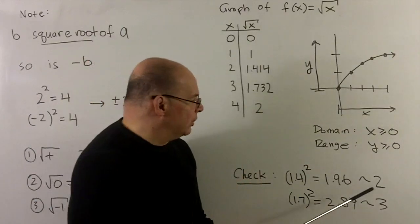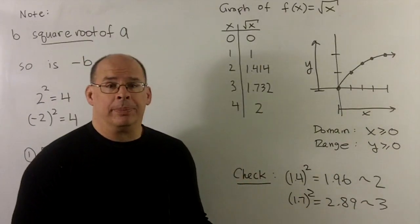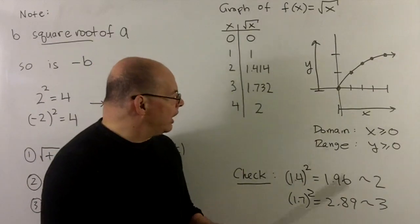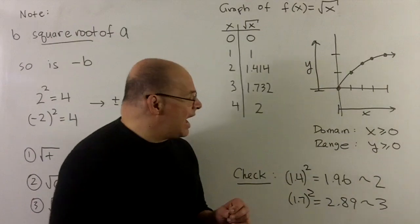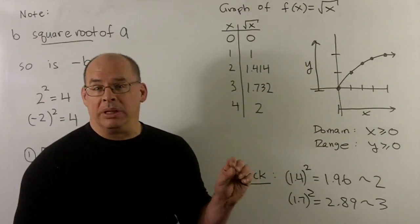which is close enough to two to be believable. Likewise, for square root of three, take 1.7 and square it, I get a 2.89. Again, in the ballpark of three, so believable.